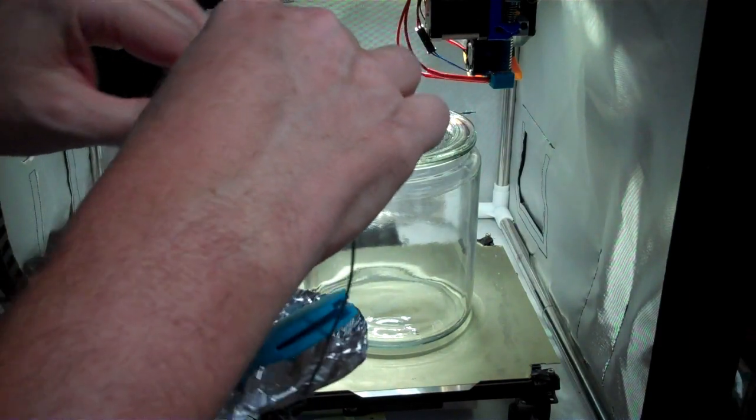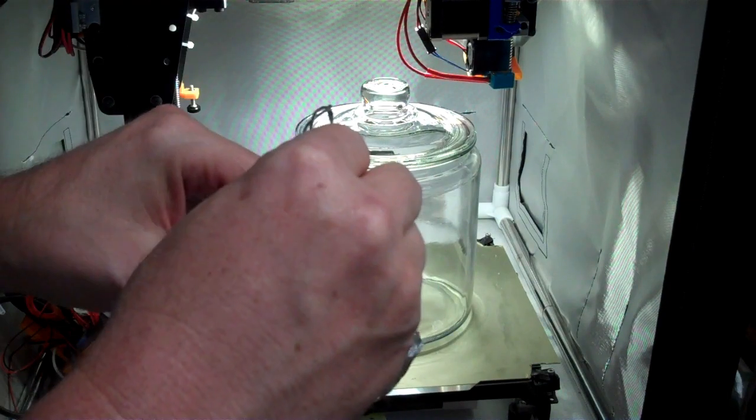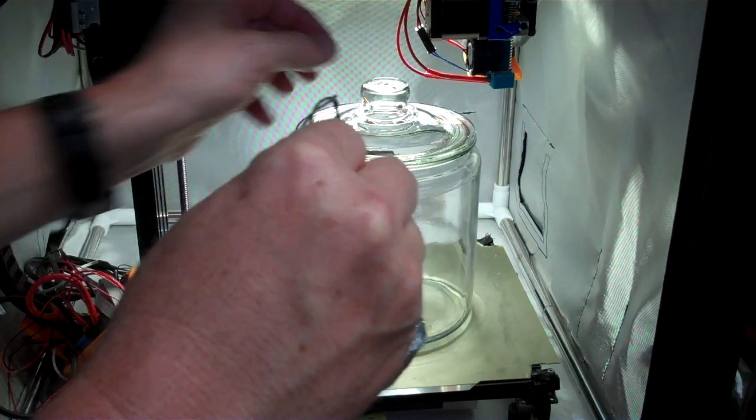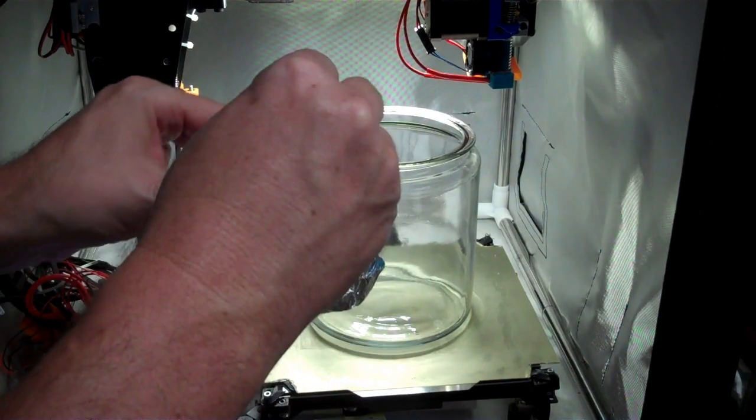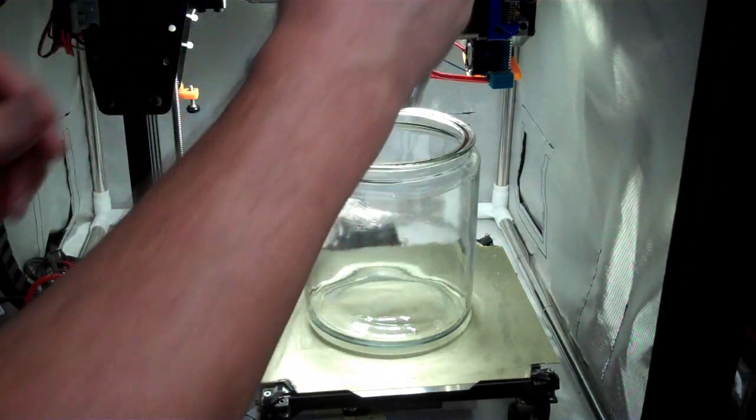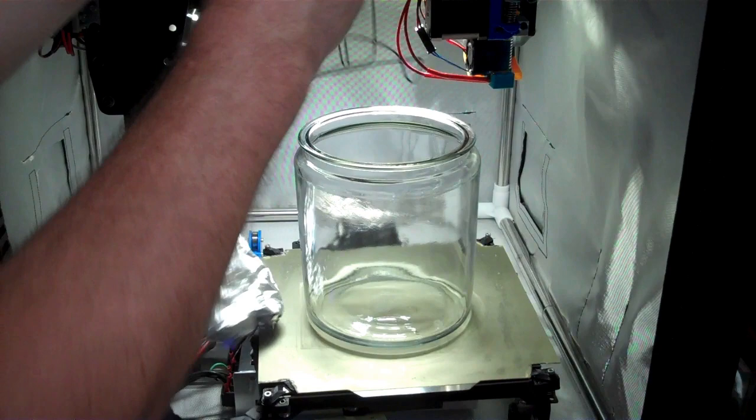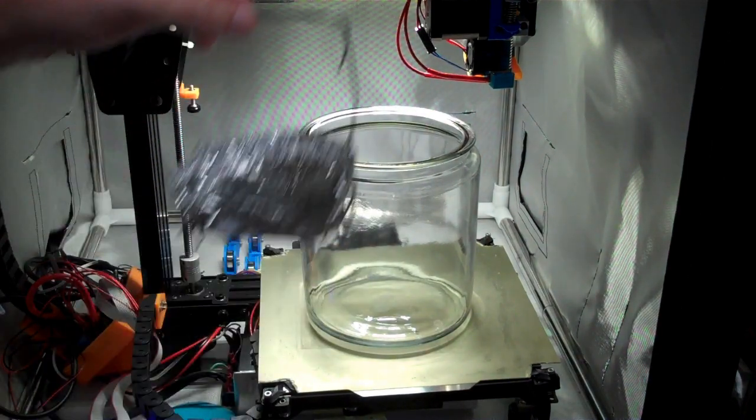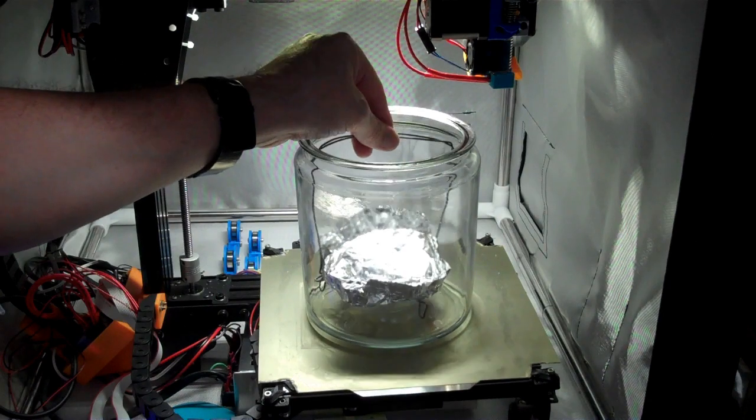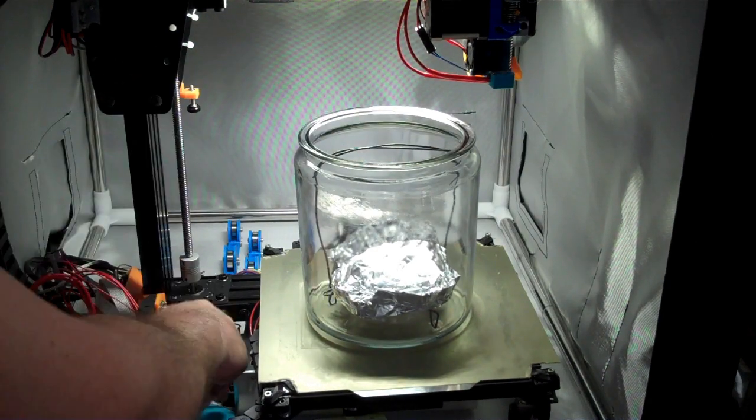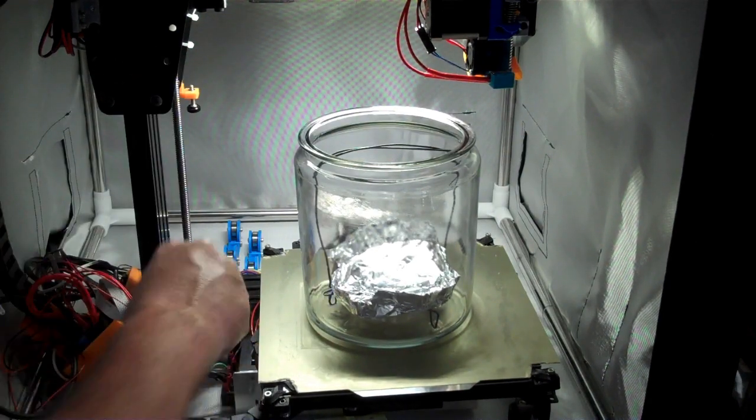The hardest part about this whole procedure is doing this without having your part fall over, especially if it's something like this with a narrow base. Sometimes it's easier to put the support material in first and then position your part by hand.